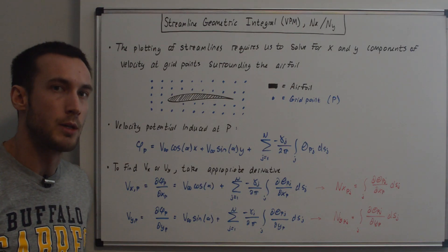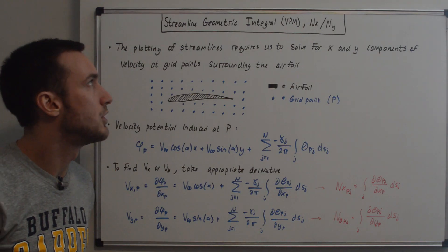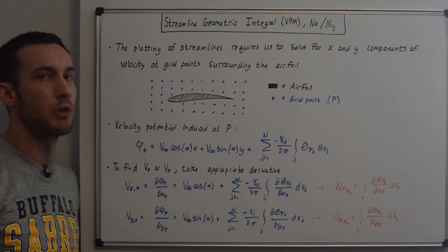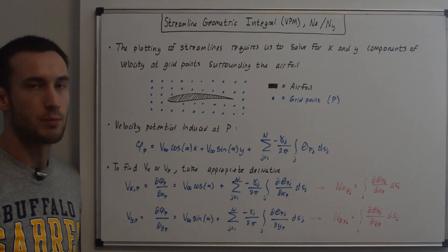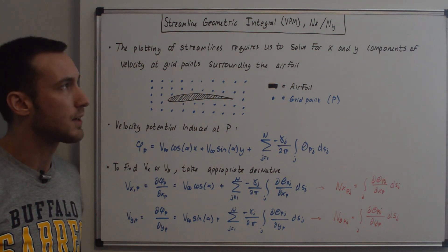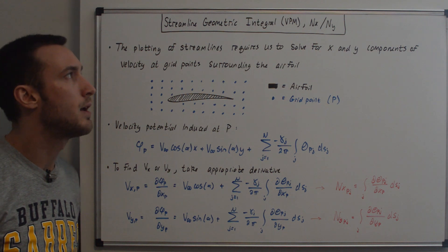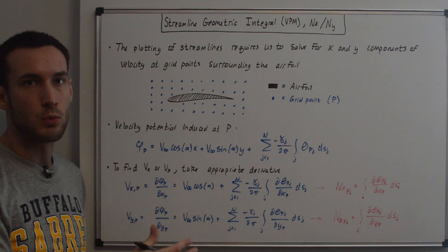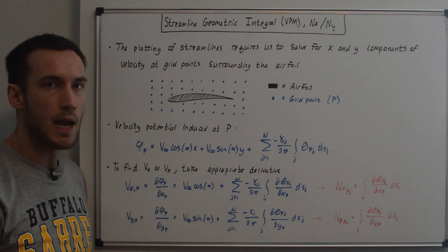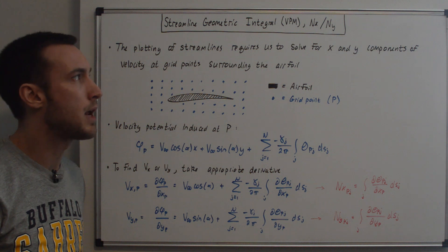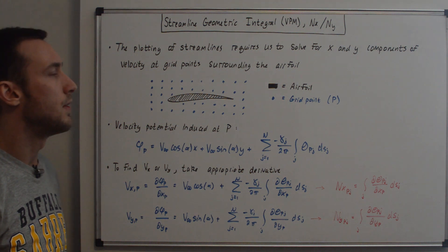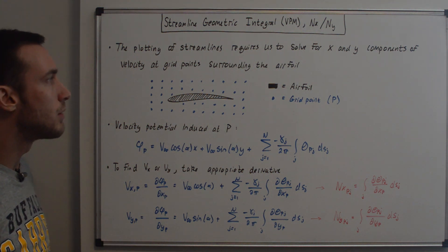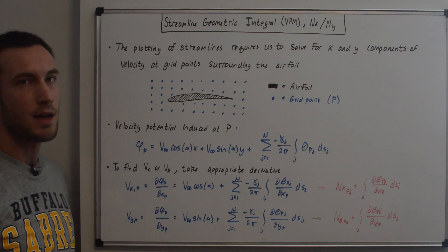In this video we're going to go through the derivation of the streamline geometric integrals for the vortex panel method, Nx and Ny. We've gone through this for the source panel method, where those were called Mx and My, so the derivation is very similar. For plotting streamlines we need the x and y components of the velocity vector at every grid point outside of the airfoil.